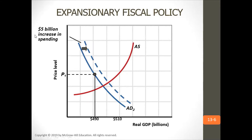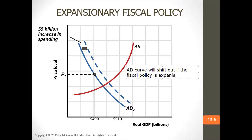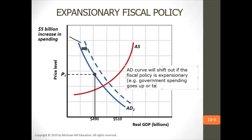If fiscal policy is expansionary, the AD curve will shift out. It'll shift out if fiscal policy is expansionary — government spending goes up, taxes go down.